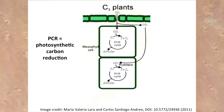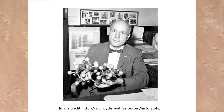All land plants use a common biochemical cycle for photosynthesis, shown here, in order to create sugars from atmospheric carbon dioxide in the presence of light. This is the so-called C3 photosynthetic carbon reduction cycle, named this way because the first products of the reaction have three carbon atoms. This cycle is also known as the Calvin-Benson cycle.